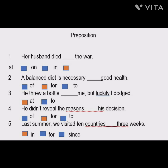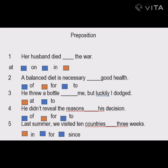Moving to the second sentence: 'A balanced diet is necessary ___ good health.' We have options — of, for, and to. A balanced diet is necessary for good health. If you use 'of' or 'to,' the sentence will not be complete. The correct preposition for this sentence is 'for.'